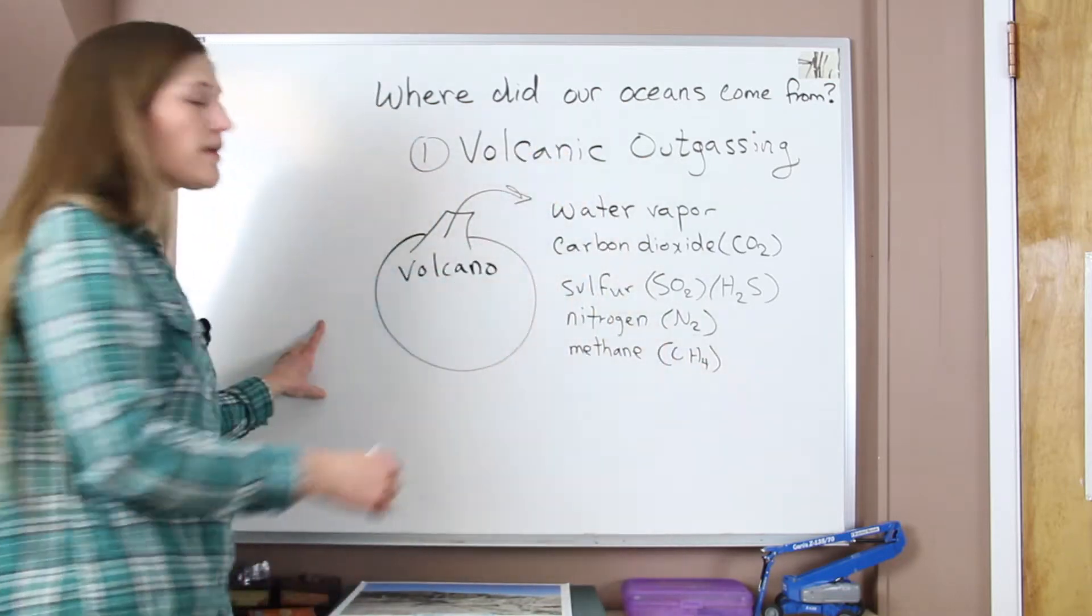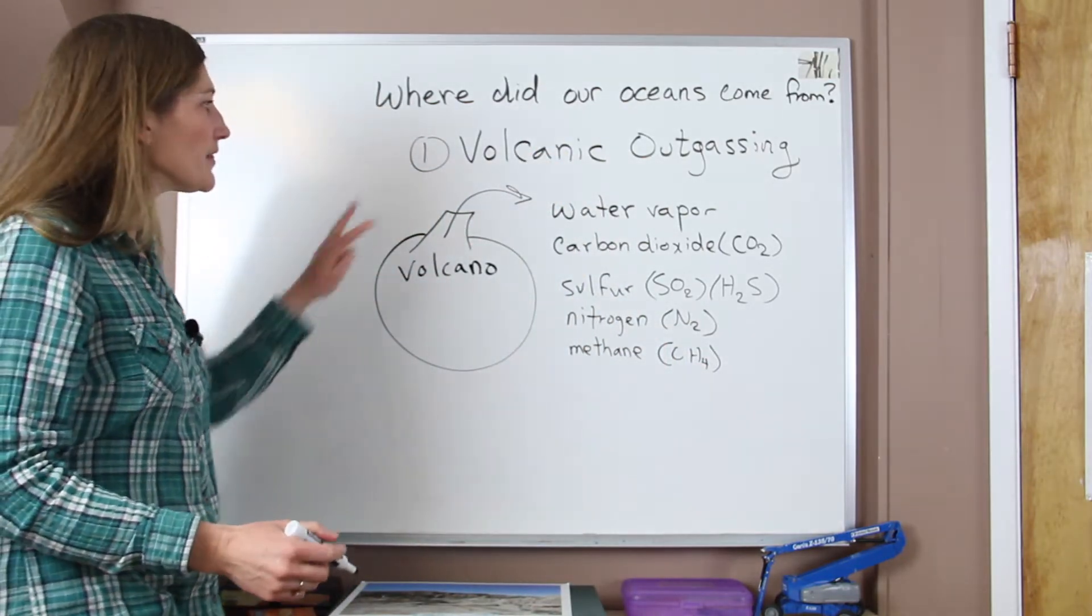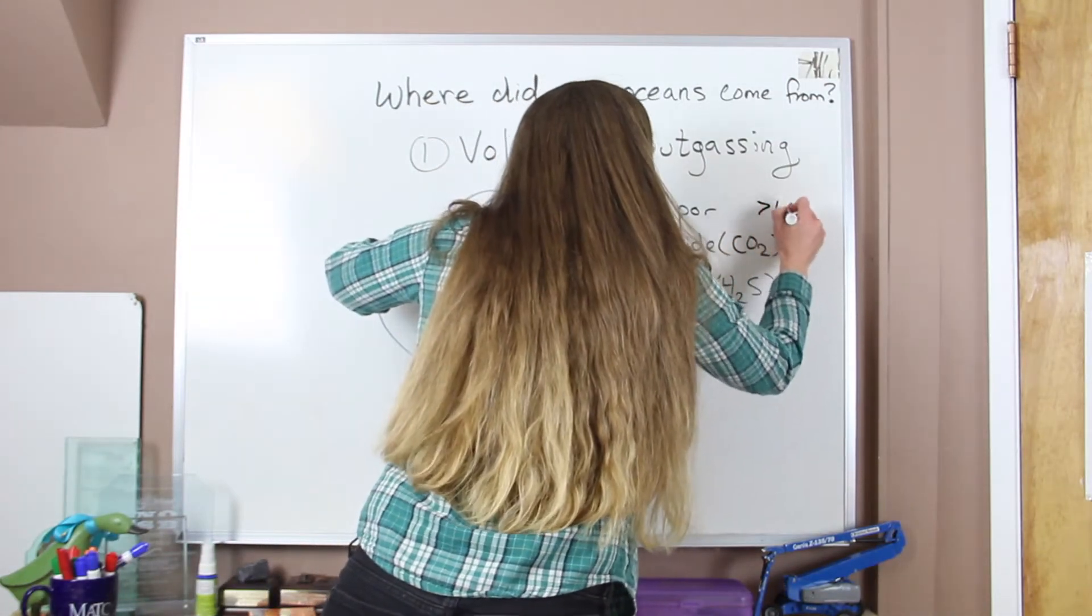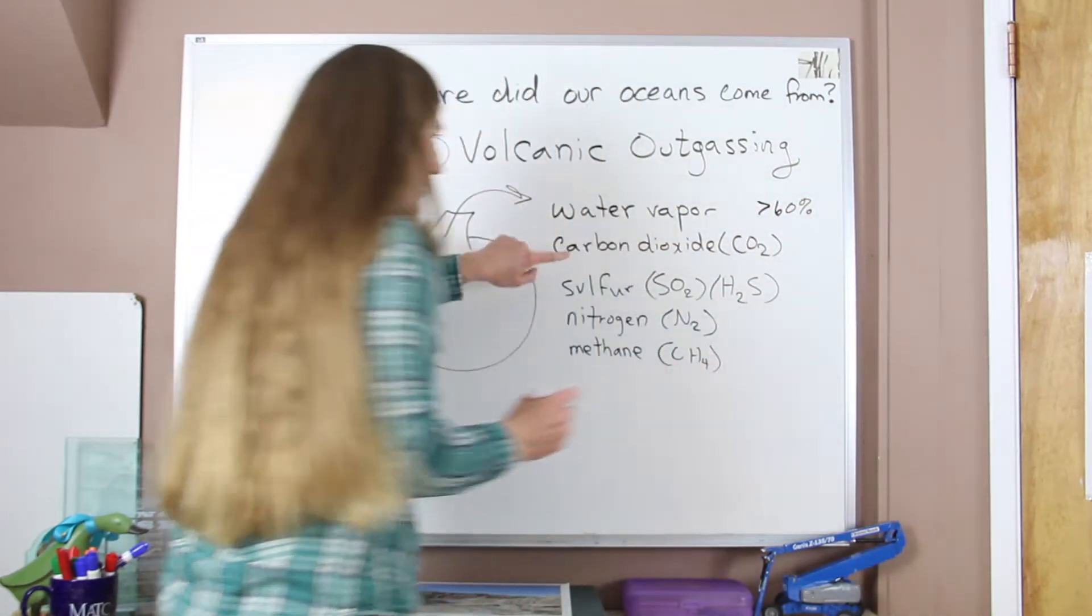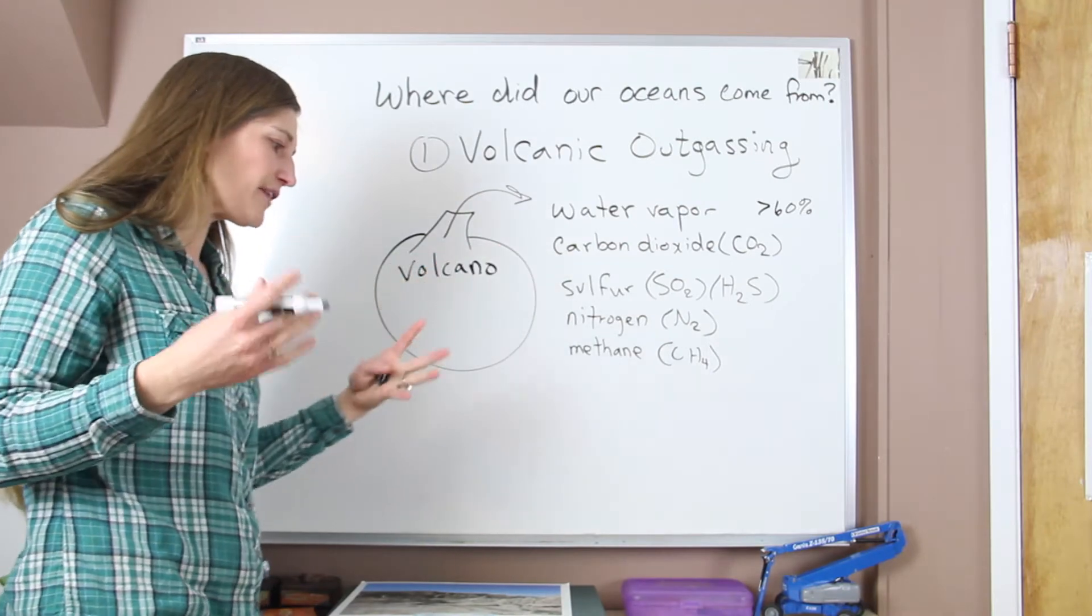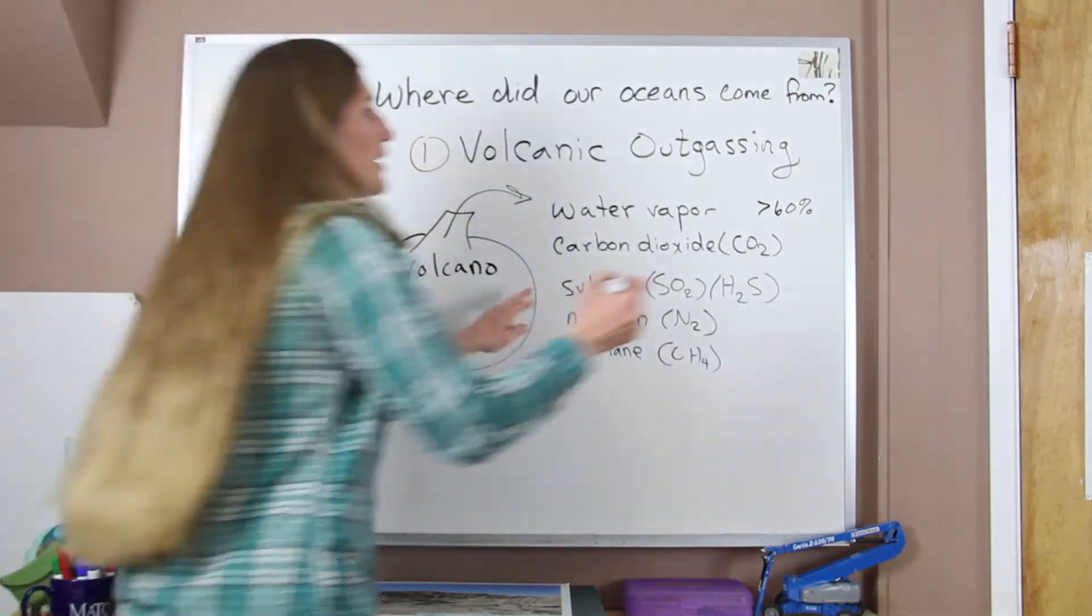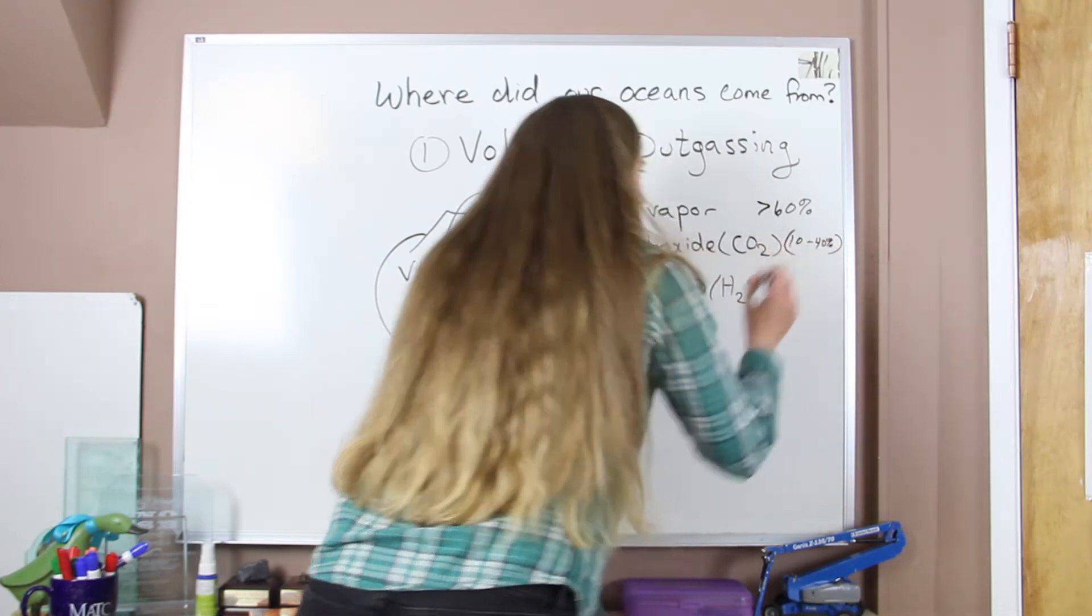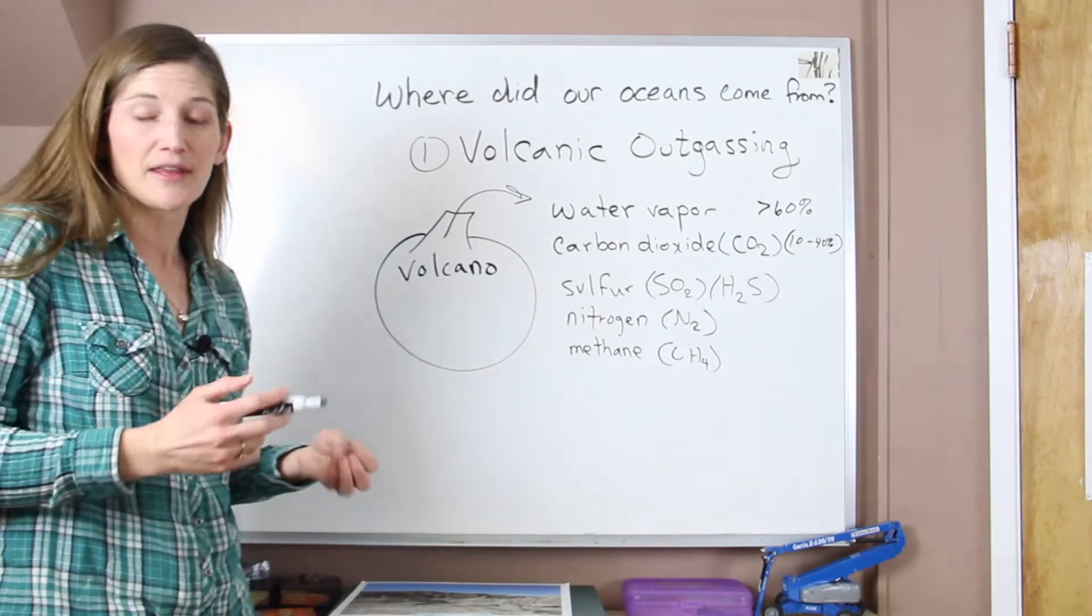Of all of these gases listed, the two most common are water vapor, which is about 60 percent, and then carbon dioxide, which varies from volcano to volcano but it's anywhere from 10 to 40 percent. And then we have little bits of everything else.